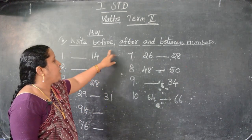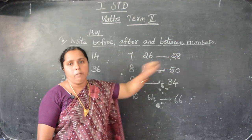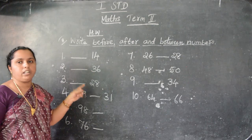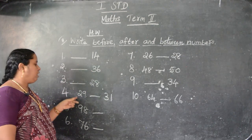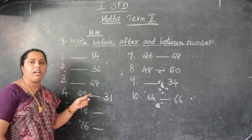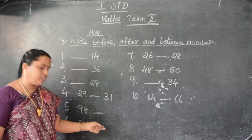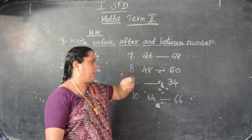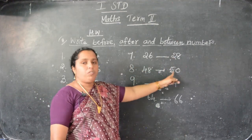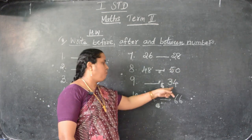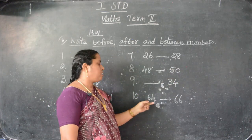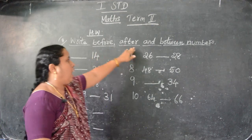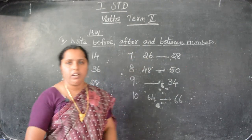So you have to write before number, after number, and between number. Here: 14, 36, 28 - you have to write the before number. Here see: 29, 31 - you have to write the between number. 98 - after number. 76 - after number. Here: 26, 28 - between number. Here: 48, 50 - between number. Here: 34 - before number. 64, 66 - between number. So you have to write before number, after number, and between number.